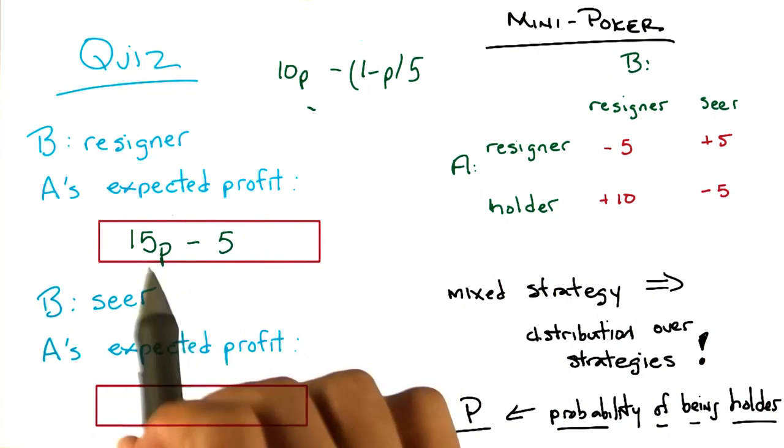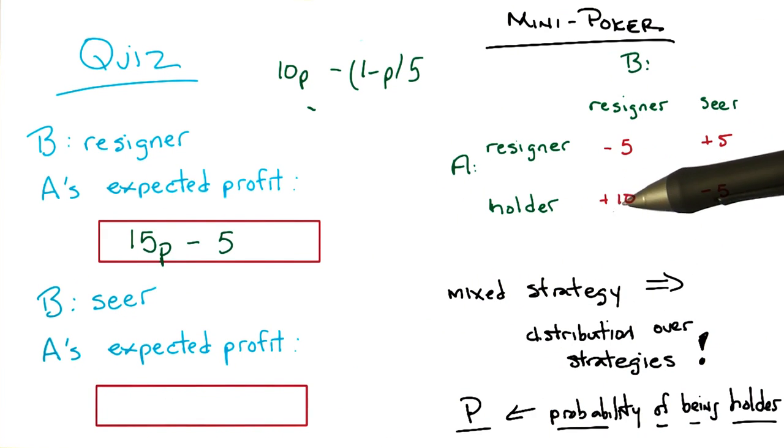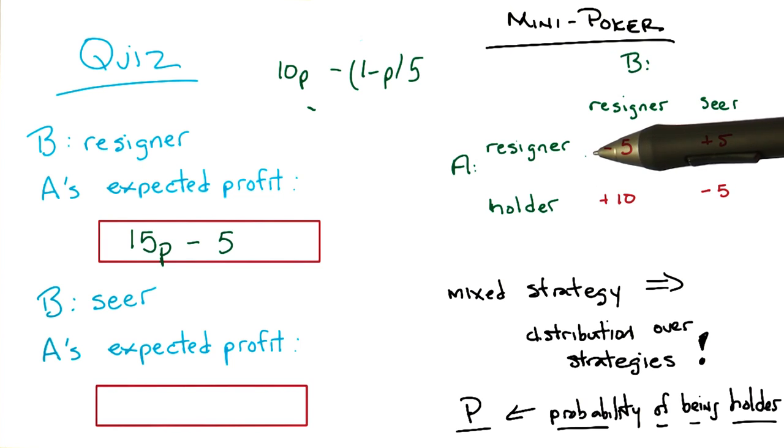And this, of course, is exactly the expected profit. As you put it, P times A is a holder, and P times, or P percentage, 1 minus P percentage, A chooses to be a resigner. And so it's just a weighted average between those two values.